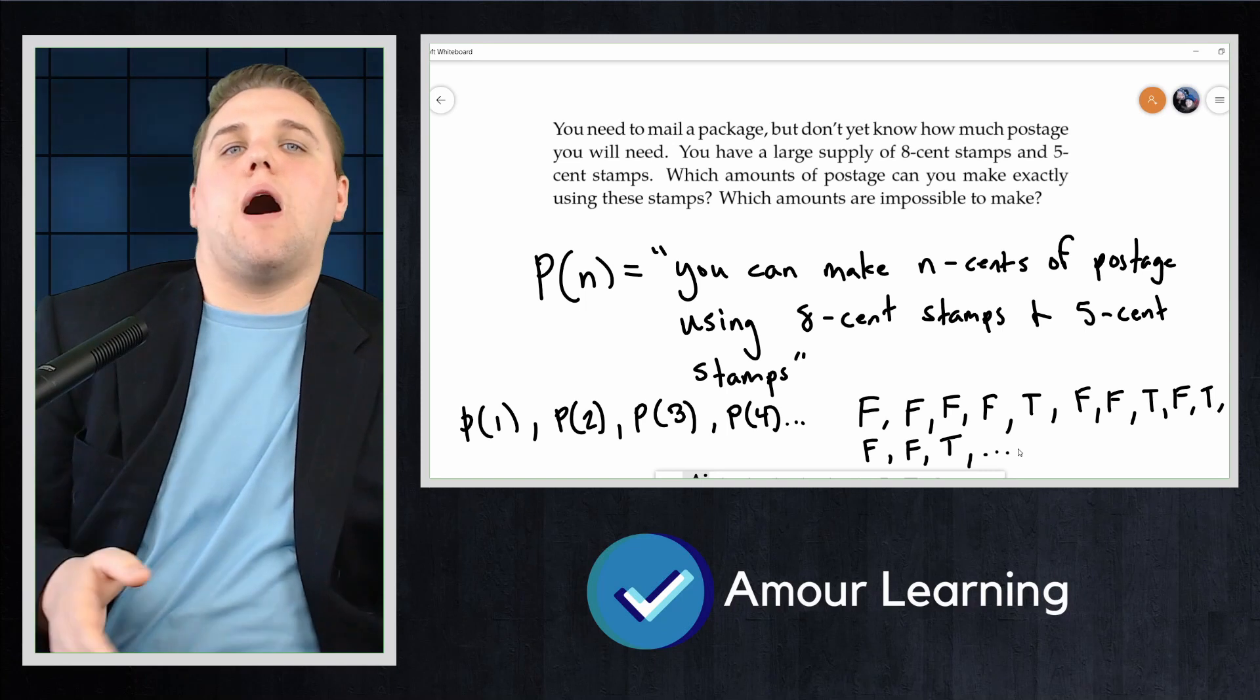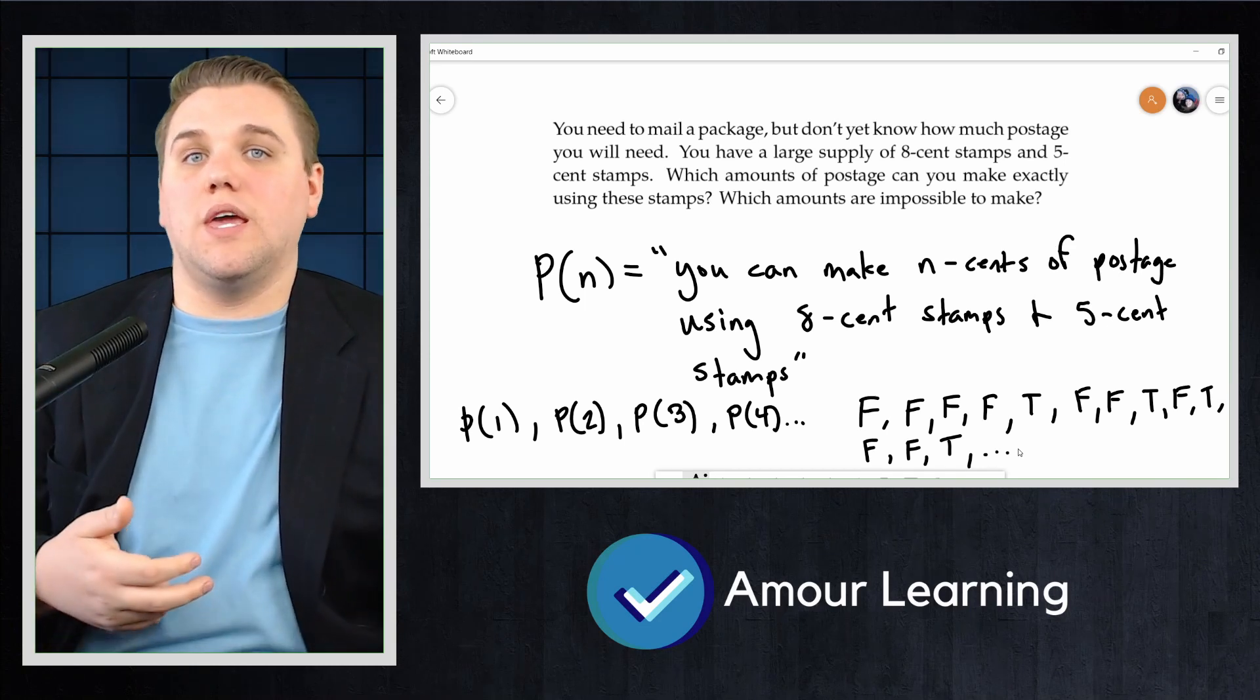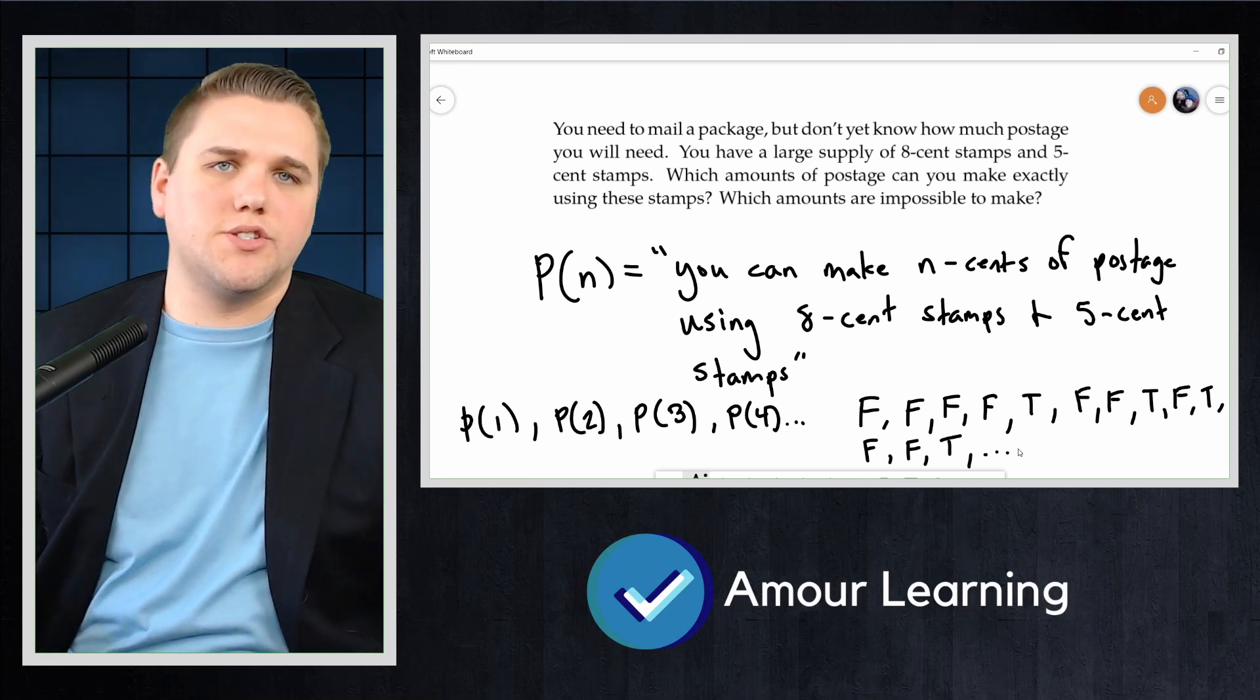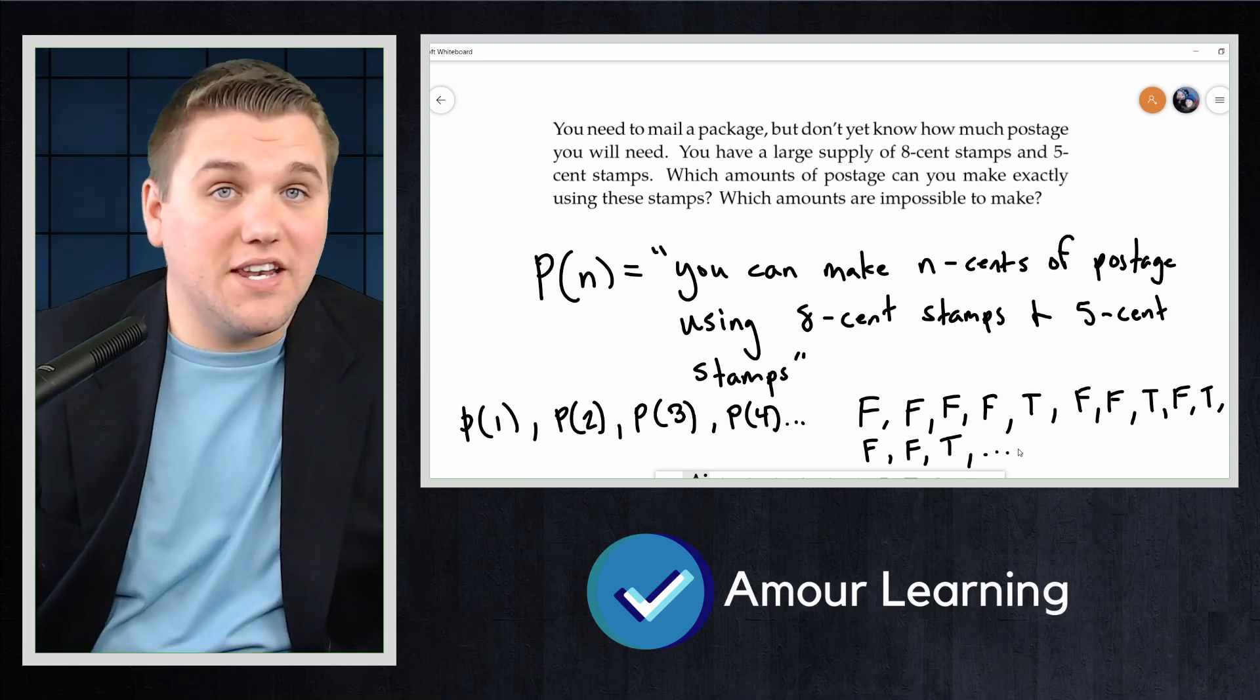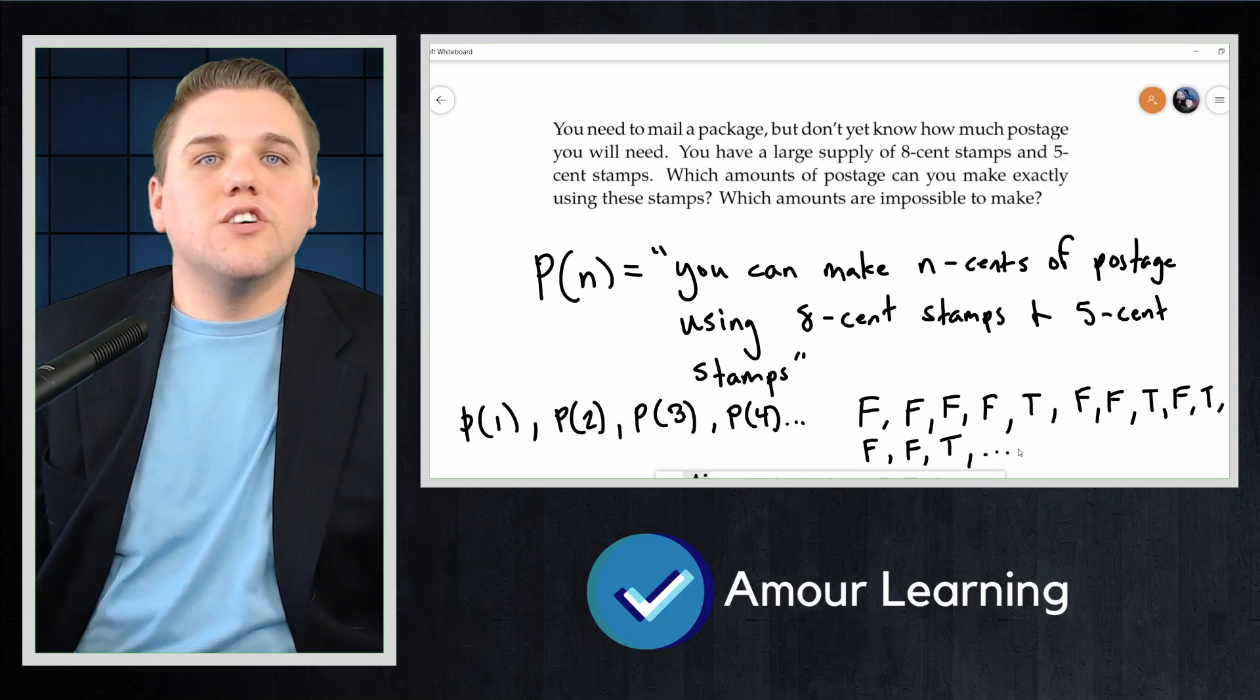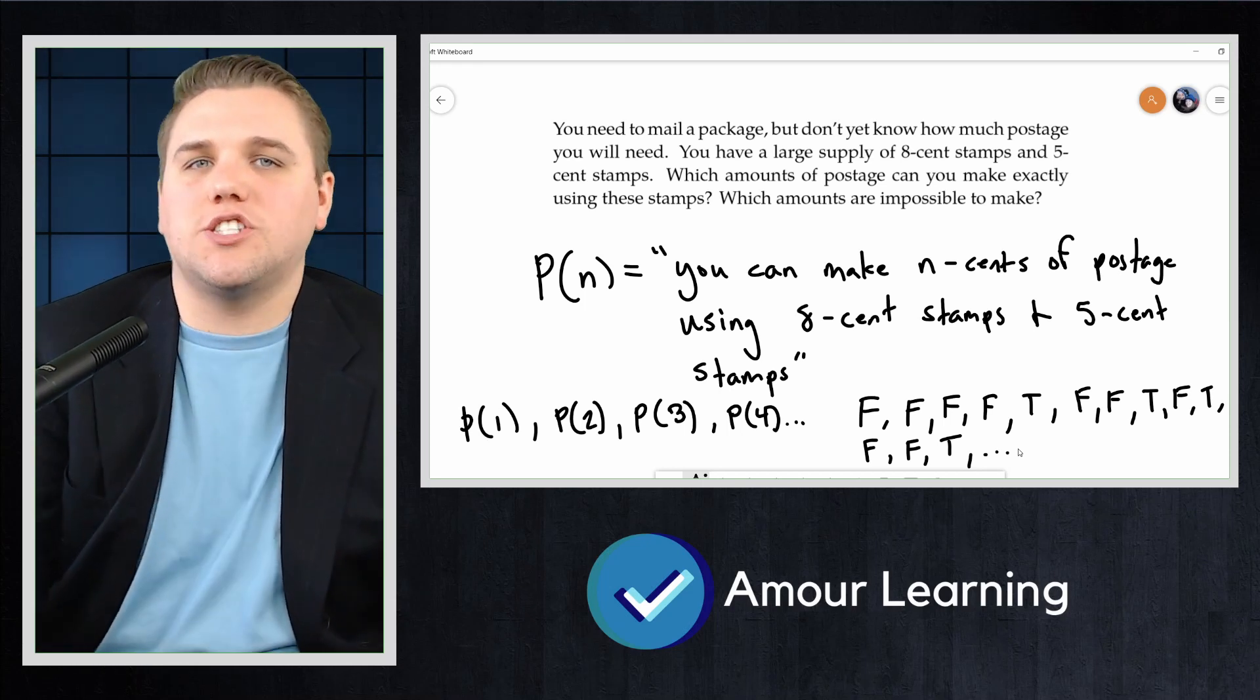Let's think a bit about how we could find the value of P(n) for some specific n. The value will either be true or false. How did we find the value of the nth term of a sequence of numbers? There were two ways we could do this. Either there was a closed formula for A(n), so we could plug in n into the formula and get our output value. Or we had a recursive definition